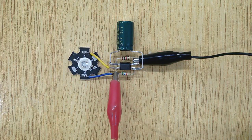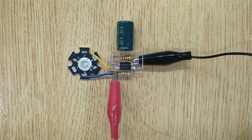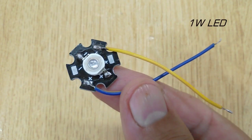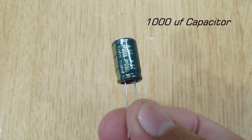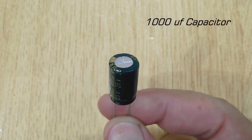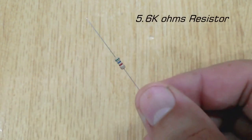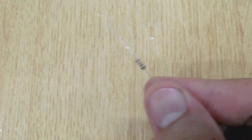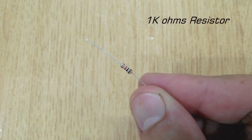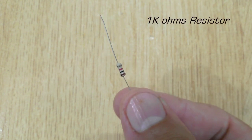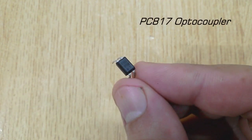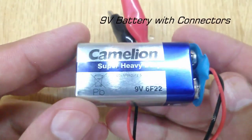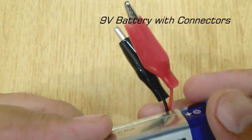To make this super LED strobe light, you will need 1 watt LED, 1000 microfarad capacitor, 5.6K ohms resistor, 1K ohms resistor, PC817 optocoupler, and 9 volt battery with connector.